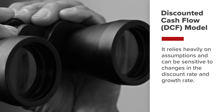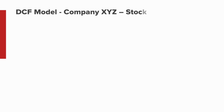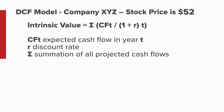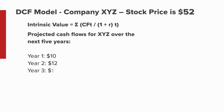In this example, XYZ's current stock price is $52. The intrinsic value is the sum of CFT divided by (1 + R)^T, where CFT represents the expected cash flow in year T, R represents the discount rate, and sigma represents the summation of all projected cash flows. Let's assume the following projected cash flows for company XYZ over the next 5 years.